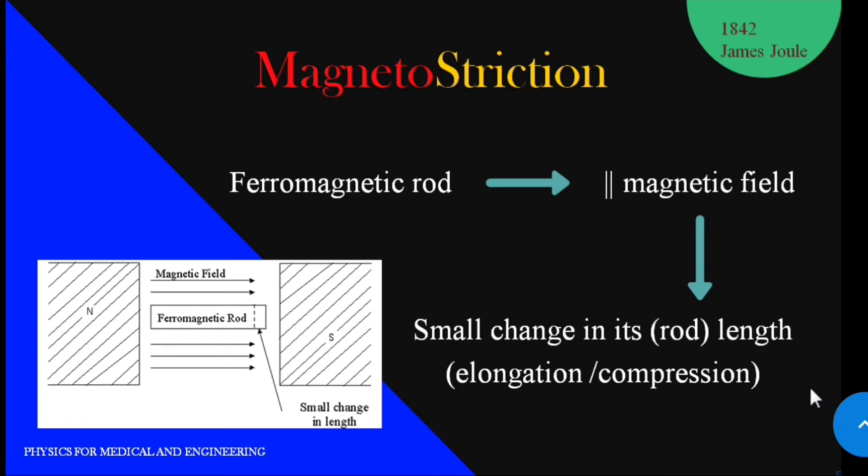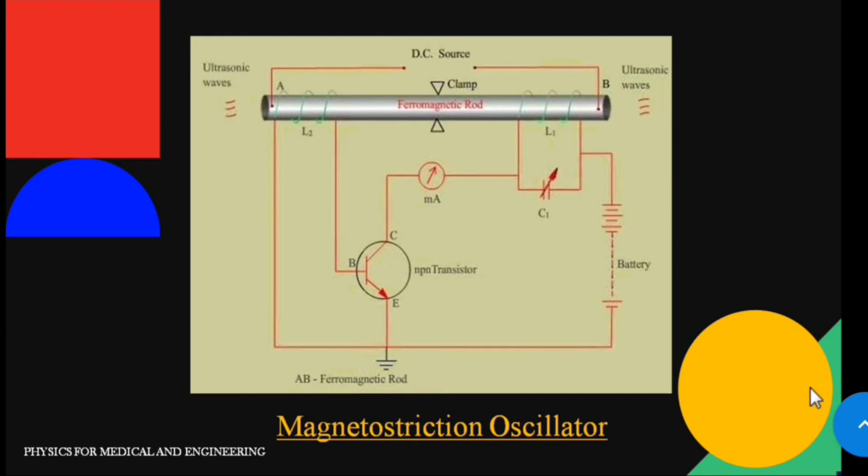Now let's understand the construction and working of magnetostriction oscillator. This is the circuit diagram. Here AB is the rod made up of ferromagnetic material like iron or nickel. This rod is clamped in the middle. The rod is permanently magnetized by passing direct current in the beginning.